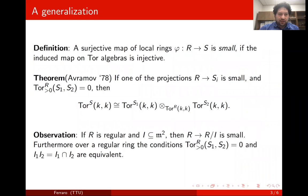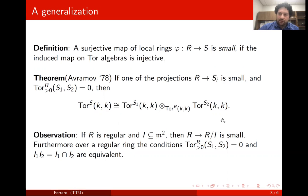Three years later, Avramov generalized this theorem in his paper on small homomorphisms. A homomorphism from R to S is small if the induced map on Tor algebras is injective. In this paper, Avramov proved that if one of these projections is small, and if S₁ and S₂ are Tor-independent, then one has this isomorphism of Tor algebras. This is a generalization because a map from a regular ring modulo an ideal in the square is always small, and furthermore over a regular ring, the Tor-independence of S₁ and S₂ is equivalent to that equality. So the hypotheses of this theorem generalize those of the previous theorem.